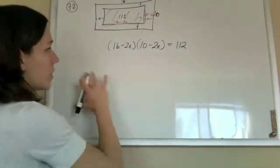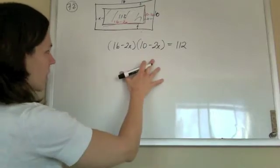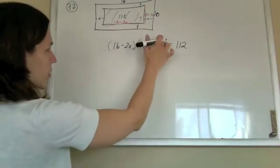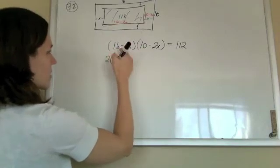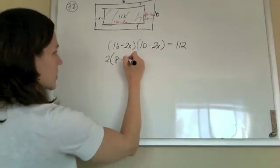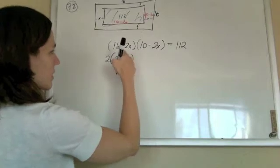Now we have the equation. We can solve this. You could FOIL this whole thing out now. To make it a little easier, I'm going to factor out some 2s to make these numbers smaller.